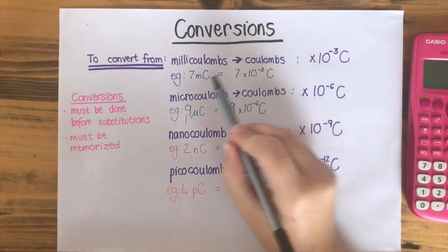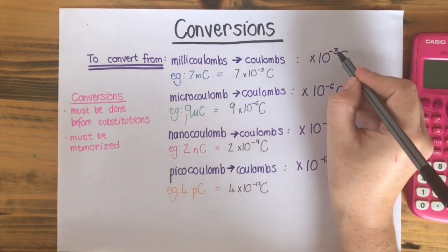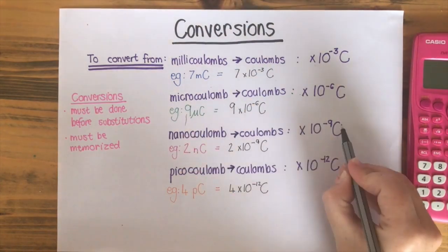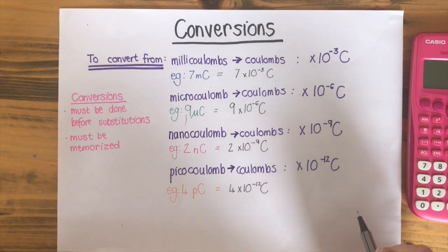You also must memorize that milli is times 10 to the power of minus 3, micro is 6, nano is 9 and picocoulombs is 12. Don't forget they are minus as well.